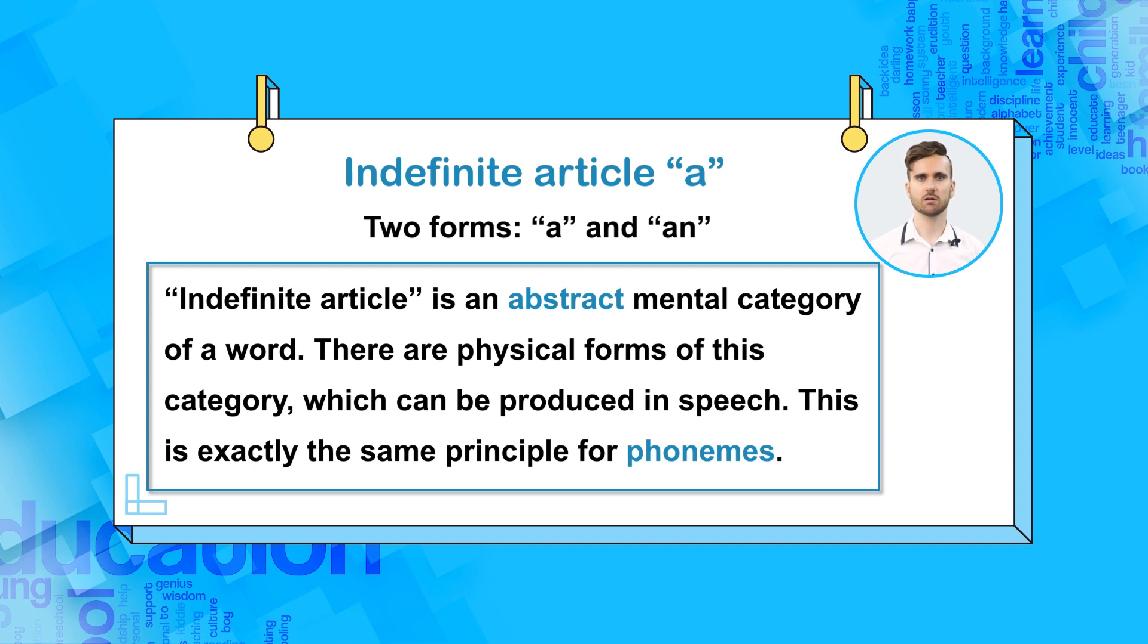Indefinite article is an abstract mental category of a word, because we cannot physically say this abstract category. Instead, there are physical forms of this category, which can be produced in speech. In this case, these are a and an. This is exactly the same principle for phonemes. Back to complementary distribution.